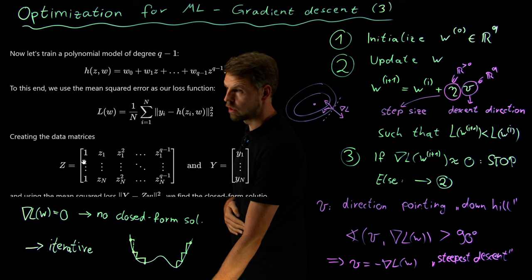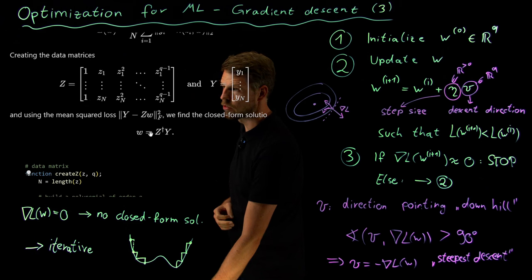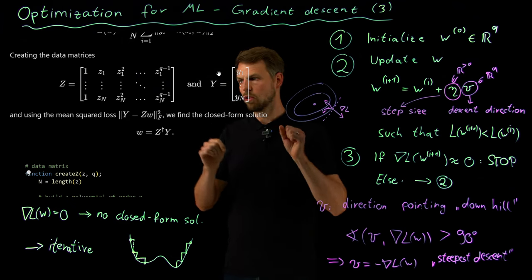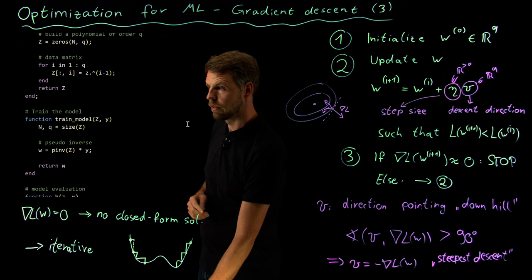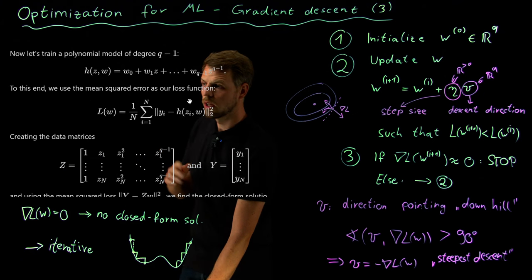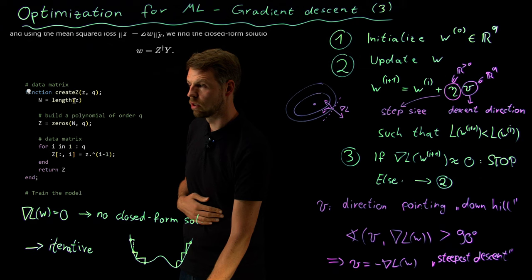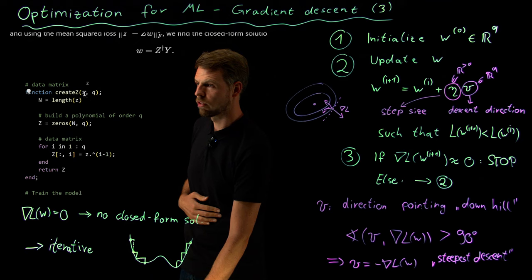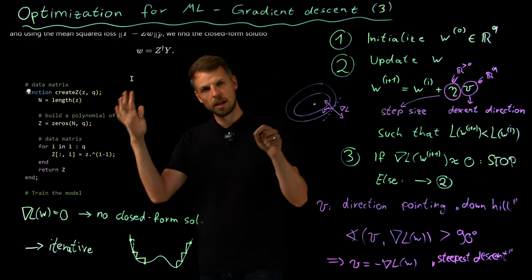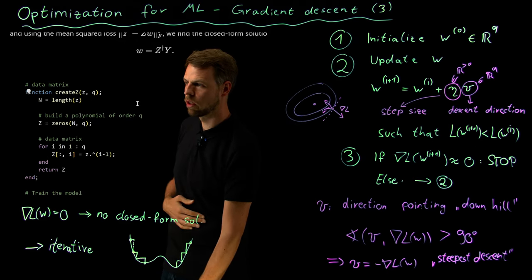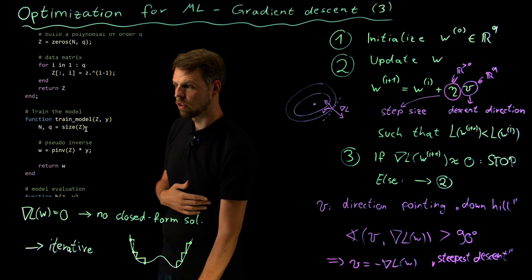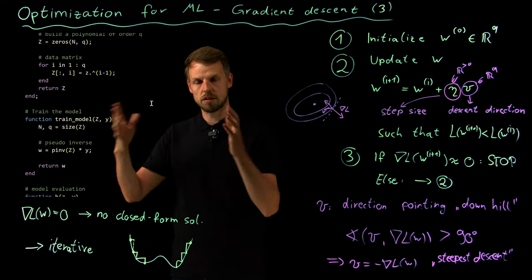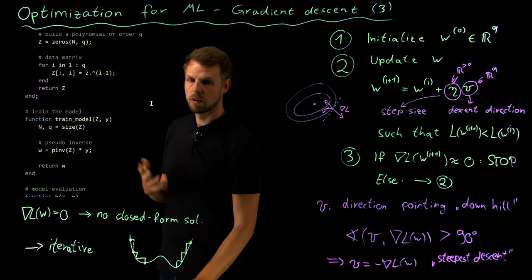We have a squared loss function and a polynomial model. If we stack each feature vector as rows into a matrix, this becomes exactly the linear regression problem solvable with the pseudo-inverse (denoted by the dagger symbol †). The training function using the pseudo-inverse is just one line of code to get the exact closed-form solution.